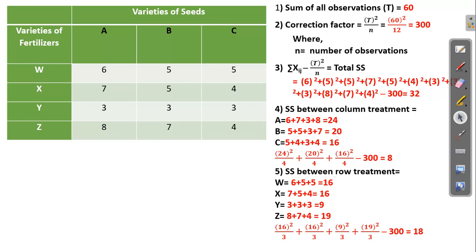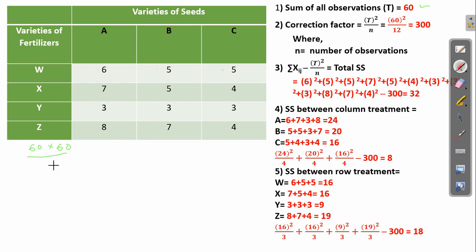As I said, the first step is to calculate the sum of all the observations. So we calculate 6 plus 7 plus 3 plus 8 plus 5 plus 5 plus 3 plus 7 and so on. The sum total of all the observations in our case will be 60. Once we have that, the next step is to calculate the correction factor: 60 multiplied by 60, divided by the total number of observations, which is 12. The end result will be 300.